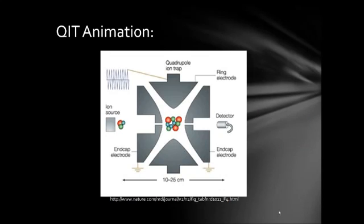This right here is a diagram of the QIT. I'm going to illustrate how it functions by using my cursor as an ion. It will start at the ion source, and the ions will travel to the end cap electrode. This is the entry end cap electrode.